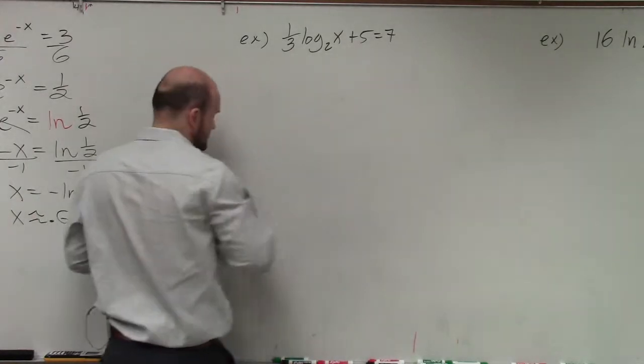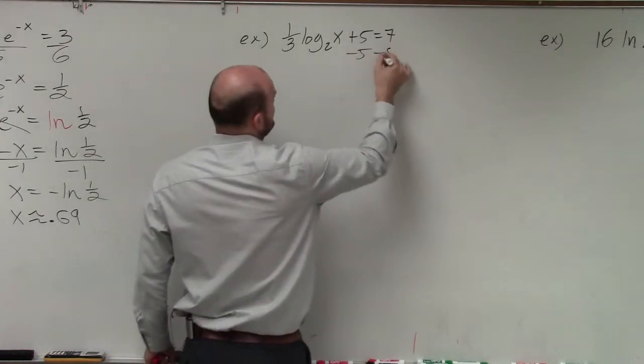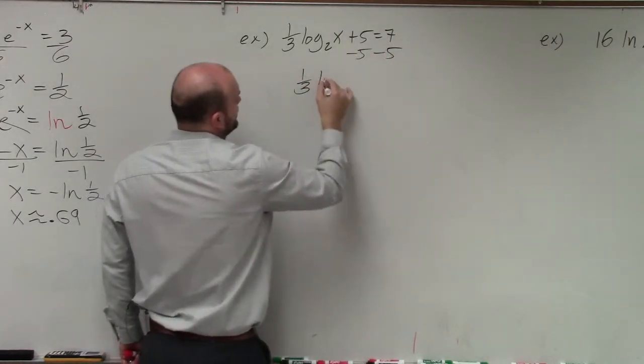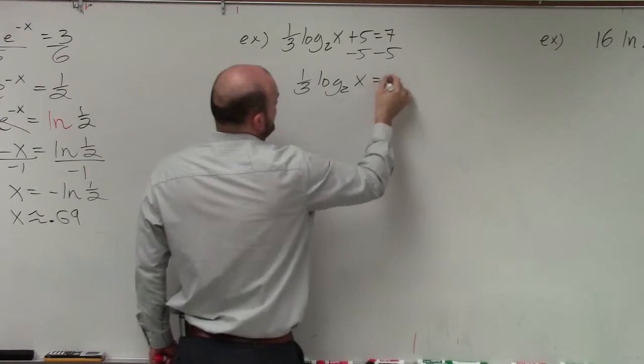So the first thing we want to do is subtract 5 on both sides. Therefore, I have 1 third log base 2 of x equals 2.